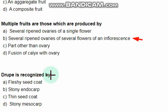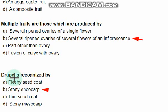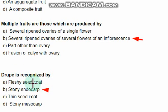The next question: drupe is recognized by — the right option is option B: stony endocarp. If a fruit has a stony endocarp then it is called drupe. A very common example is mango — mango fruit is a drupe.